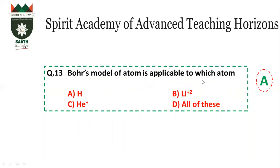If the question had asked 'which species,' then hydrogen, He⁺, and Li²⁺ would all qualify because Bohr's model applies to single-electron species. Helium ion and Li²⁺ each have only one electron, so Bohr's model applies to all of them as single-electron species.